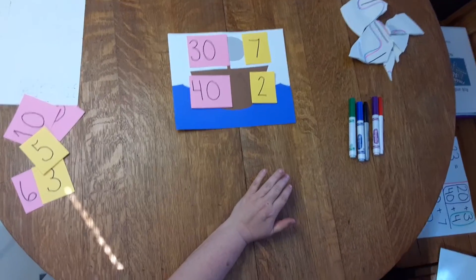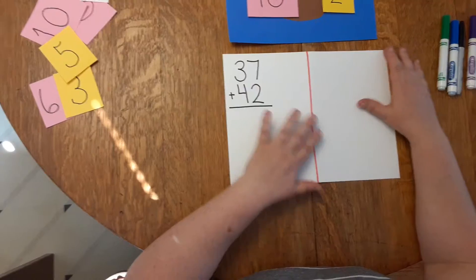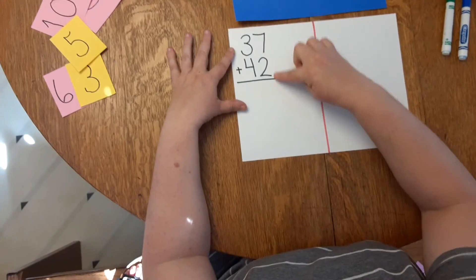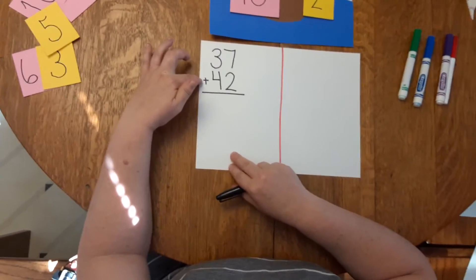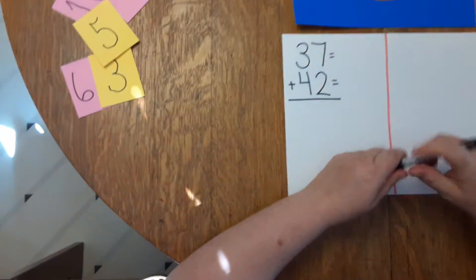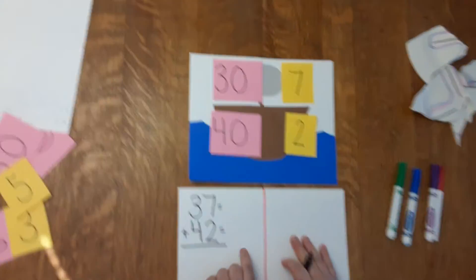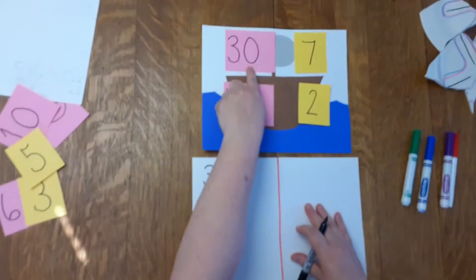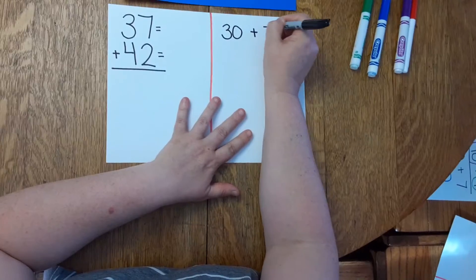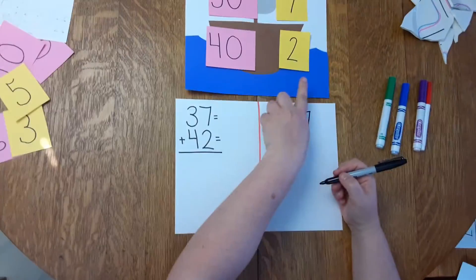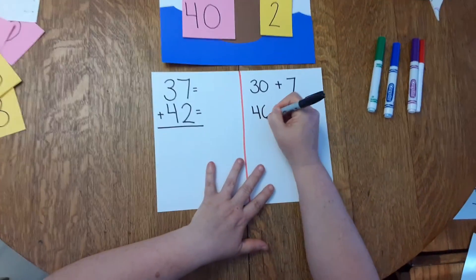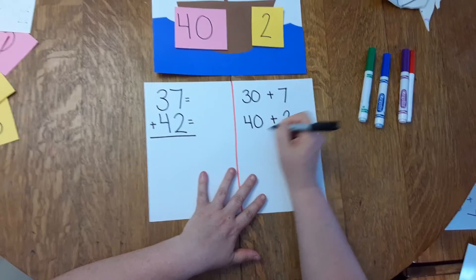Now, to transfer it to paper, here's my paper again. I fold it. I write the problem vertically. 37 plus 42. My equal sign, and I look at my pirate ship deck. 37 is 30 plus 7. 42 is 40 plus 2. And I draw my line.